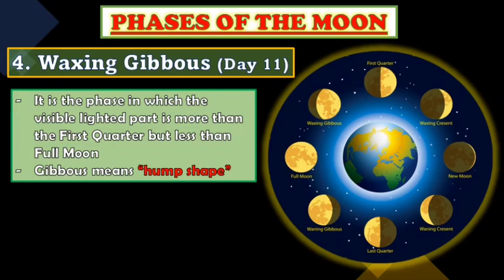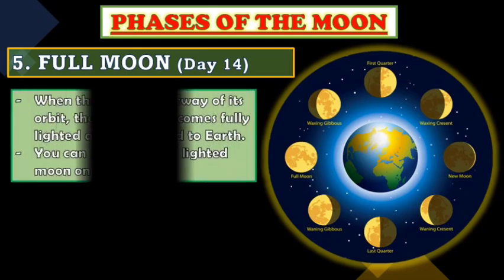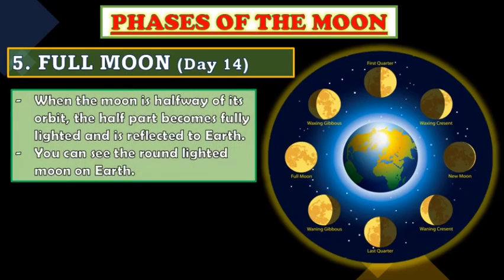Number five is the Full Moon, on day fourteen. When the moon is halfway through its orbit, the half facing Earth becomes fully lighted and is reflected to Earth. You can see the round, fully lit Moon from Earth.